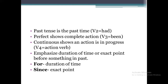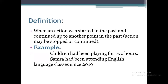Let's look at the definition of Past Perfect Continuous sentences. The definition is: when an action was started in the past and continued up to another point in the past. So the action which was started in the past is continuously being done by a person up to another point in the past, and the action could be stopped or continued — we have both possibilities in this tense.